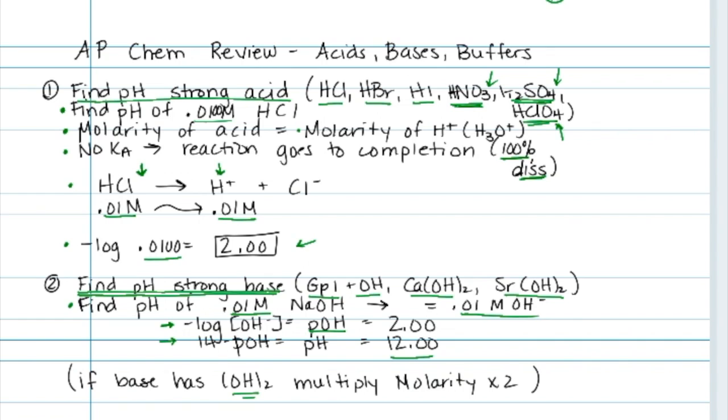In order to do the percent dissociation, we do x over initial times 100. When we put those numbers into the equation, we get 0.126% dissociation.